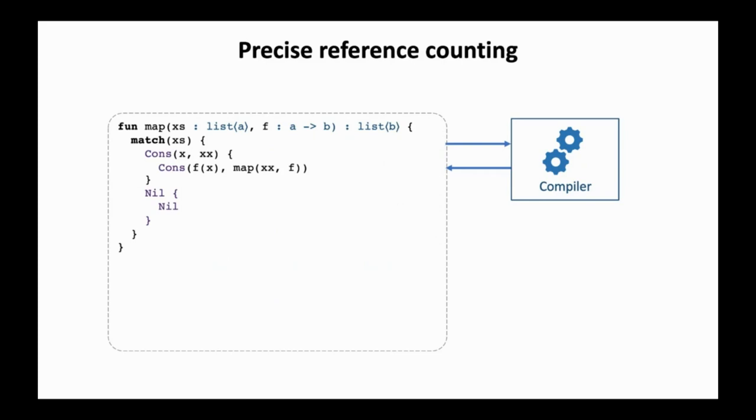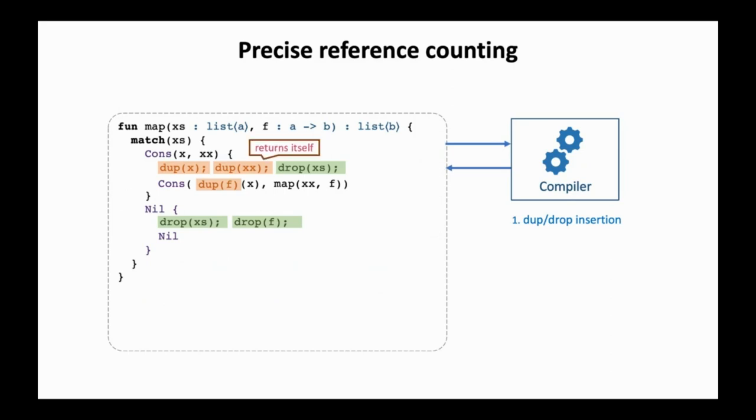Before we proceed, we slightly reformat map for the changes to be easy to see. For this example, Perceus first does dump and drop insertion. In the cons branch, first, the head and the tail of the list are dumped, where a dumpX operation increments the reference count of an object and returns itself. The dropXS diverges the initial list node. We need to dump F as well as it is used twice, while X and XX are consumed by F and map respectively. At first blush, this seems more expensive than the scoped approach. But as we will see, this change enables many further optimizations.